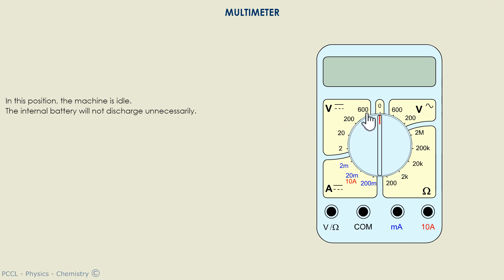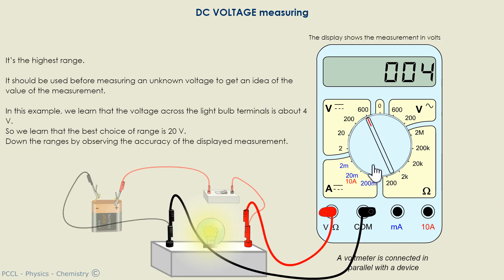If we want to measure voltages, then there is a wire on the COM terminal. It always will be. The other wire will be on the connection terminal noted at V, volts. We learn here that the voltage measured at the terminals of the bulb, between these two points, is around 4 volts.